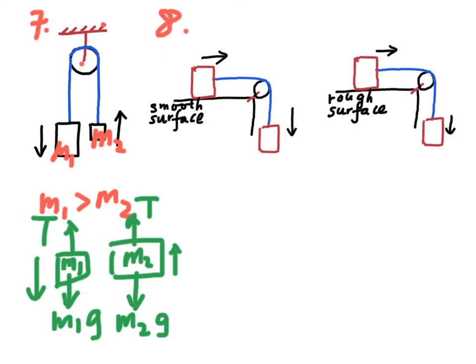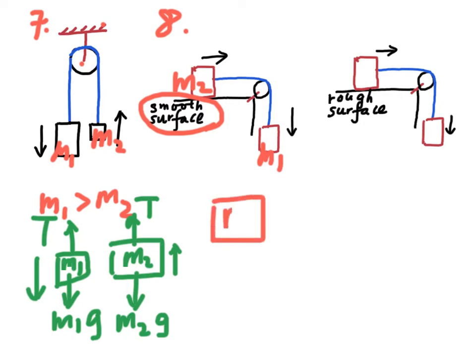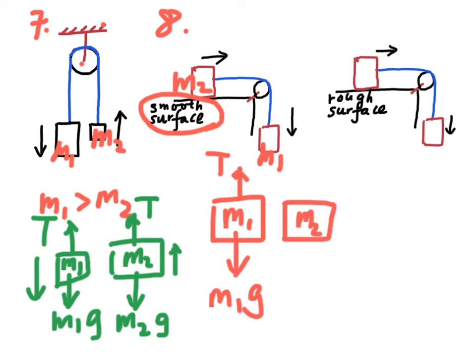In case eight, two blocks of mass M1 and M2 are connected by a string that passes over a pulley. M2 is initially on a smooth surface. The forces acting on M1 are its weight and the tension of the string. The forces acting on M2 are the tension of the string, its weight, and the normal reaction.